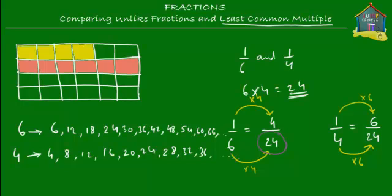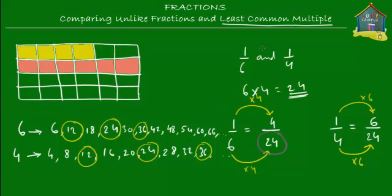Now we find the common multiples — numbers that appear in both the multiples of 6 and the multiples of 4. The common numbers are 12, 24, and 36, since each appears in both rows. So the common multiples of 6 and 4 are 12, 24, and 36.